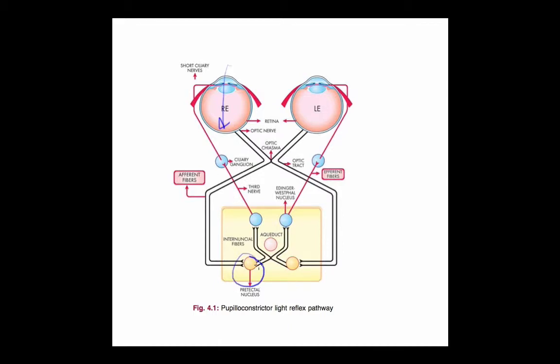Then, fibers are sent bilaterally to each Edinger-Westphal nucleus. The Edinger-Westphal nucleus is where the parasympathetics arise. Preganglionic parasympathetic first-order neuron is sent from the Edinger-Westphal nucleus to the ciliary ganglion, and then the post-ganglionic parasympathetic is sent via the short ciliary nerves to the iris.